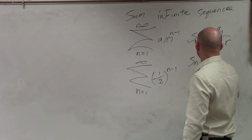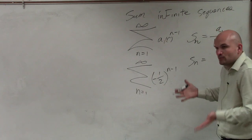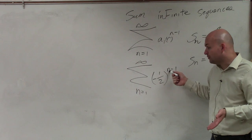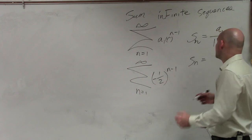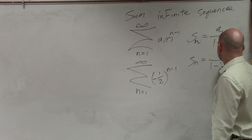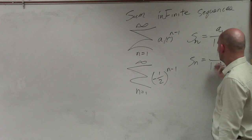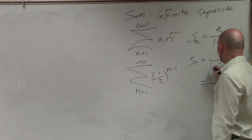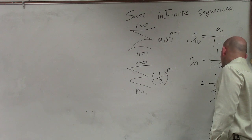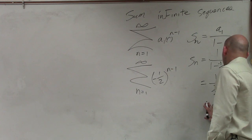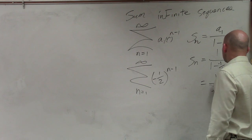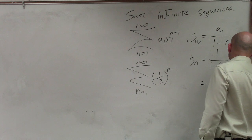So S equals a sub 1. Our first value starts at n equals 1, so we plug 1 in: 1 minus 1 is 0, and negative one-half raised to the 0 power is 1. Divided by 1 minus negative one-half. One minus negative one-half is 3 halves. Then multiply by the reciprocal — 2 thirds. So your sum is 2 thirds.